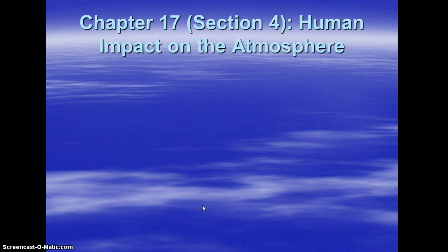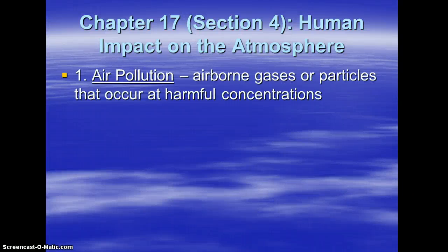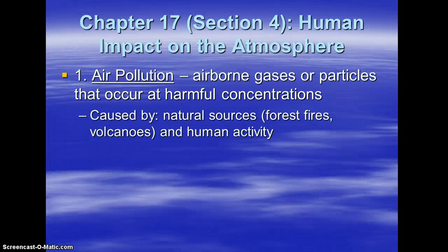In your books on chapter 17, you should read section 4 of that chapter — not the entire chapter, just section 4. It's titled 'Human Impact on the Atmosphere' because you will need to know that stuff. Air pollution is defined as airborne gases or particles that occur at harmful concentrations — it's all about the concentration. Air pollution can be caused by natural sources like forest fires and volcanoes, but human activities are also occurring all over the planet and are having some major ramifications.